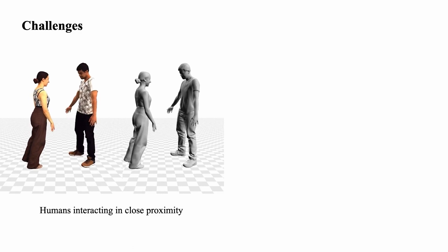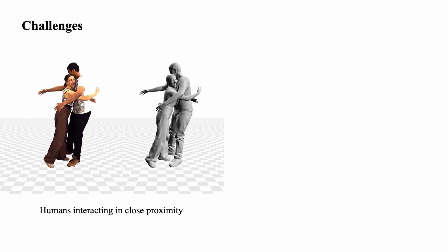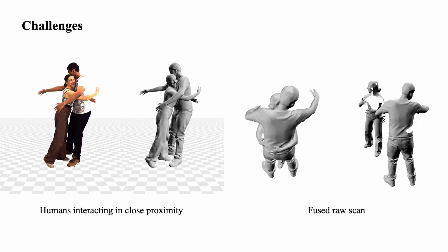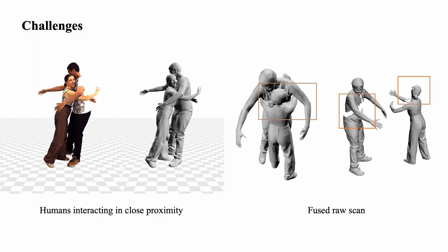To analyze closely interacting people, we must be able to disentangle the involved subjects. Yet, even with high-end multi-view systems that perform 3D surface reconstruction, this is difficult, and the final reconstruction is typically a single, fused mesh without any instance-level information.